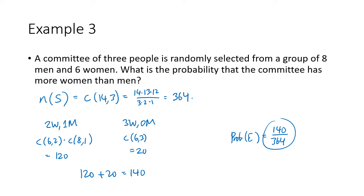The basic idea is to apply the same counting and combinatorics techniques we've learned, using our formulas and making sure our sample space consists of equally likely outcomes.